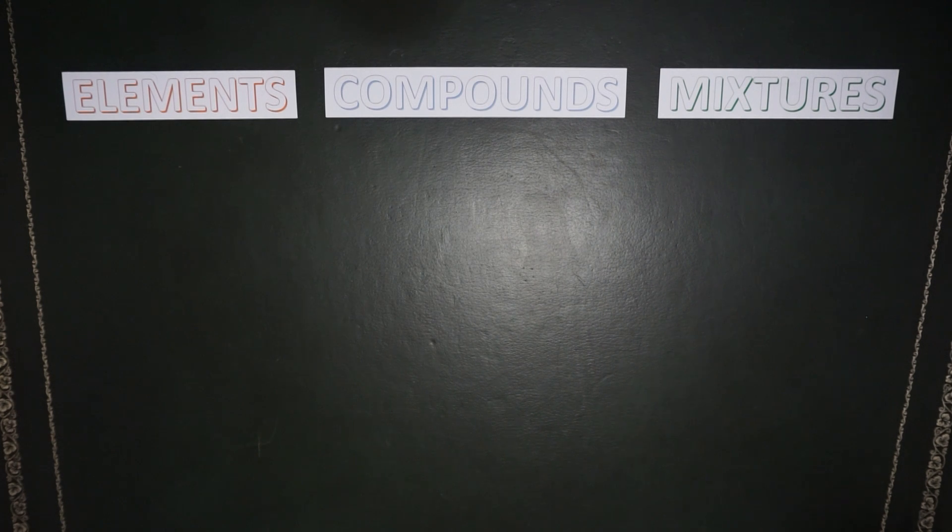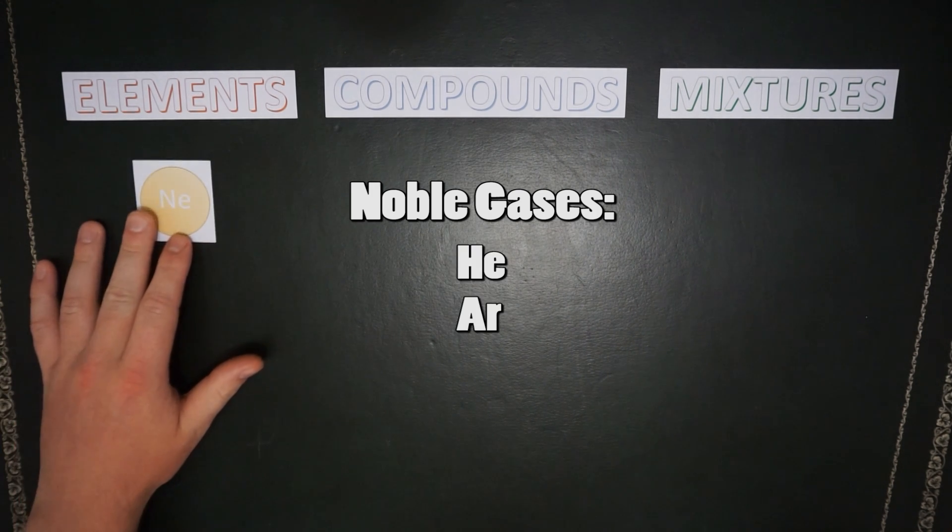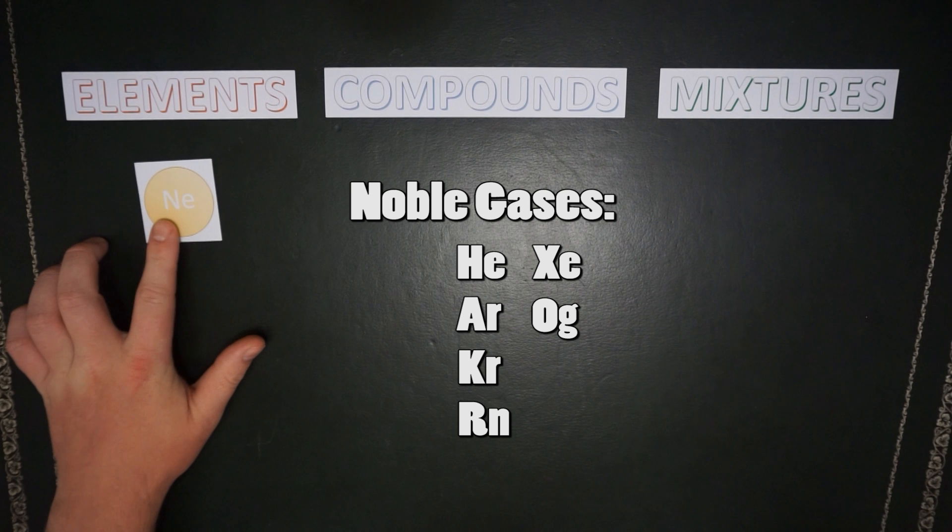Each element has its own preference for how it likes to bond with other atoms. For example, we have our seven noble gases: helium, argon, krypton, radon, xenon, oganesson, and neon.